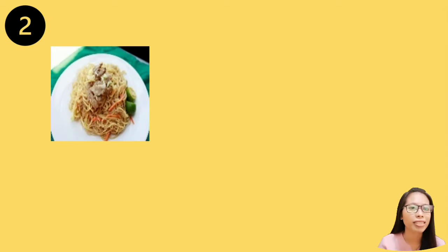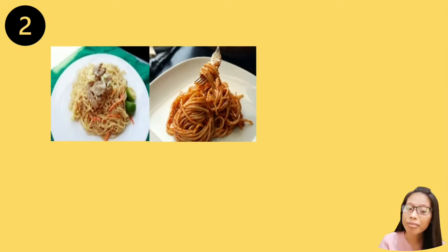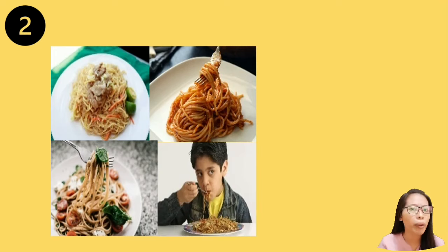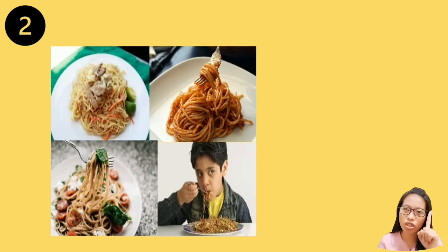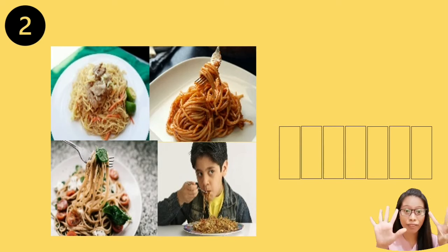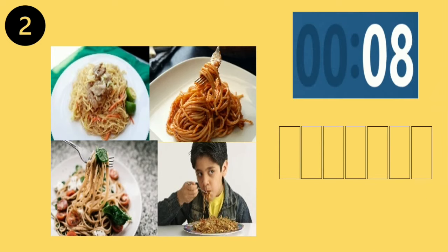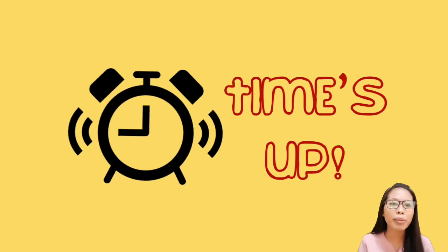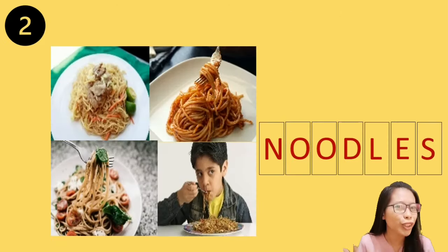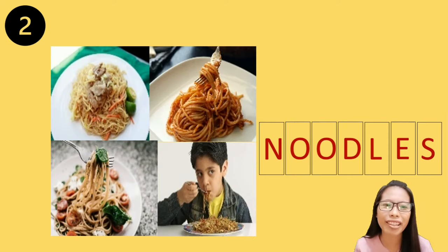How about the next one? There is a pincer, a spaghetti, a pasta, and a boy eating spaghetti. Let's describe the pictures in just one word. The word here also has 7 letters. The answer is noodles. You got it right, well done.